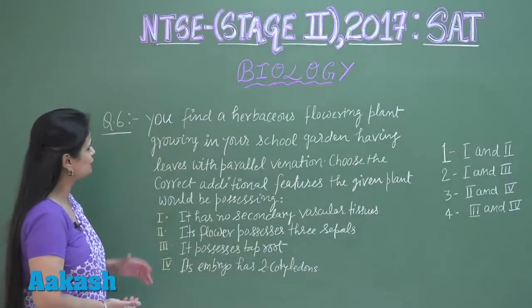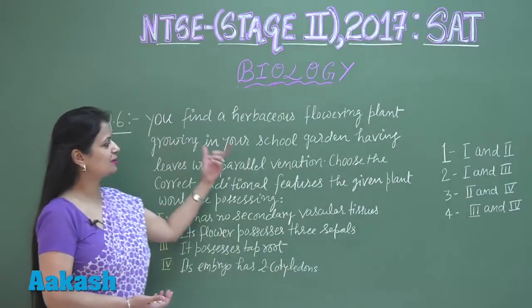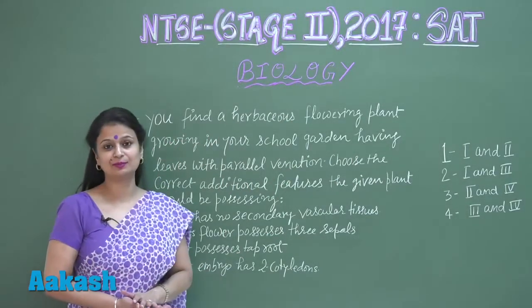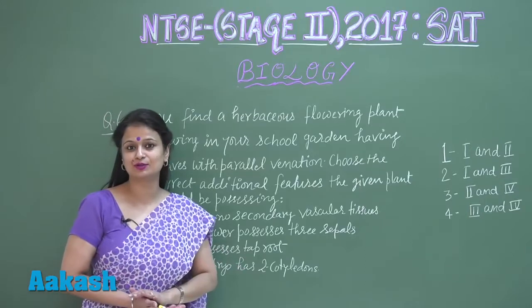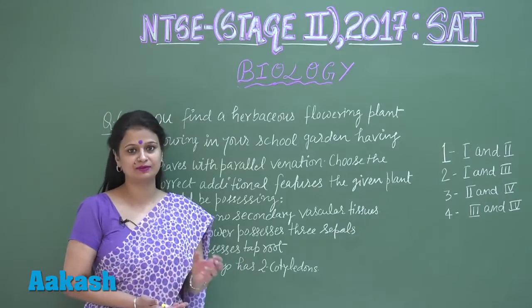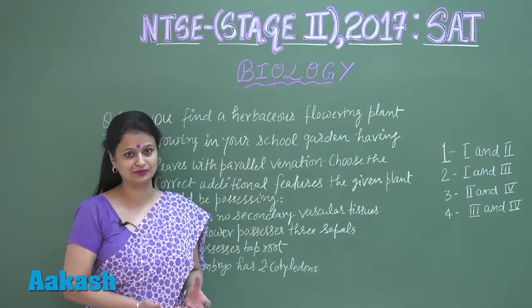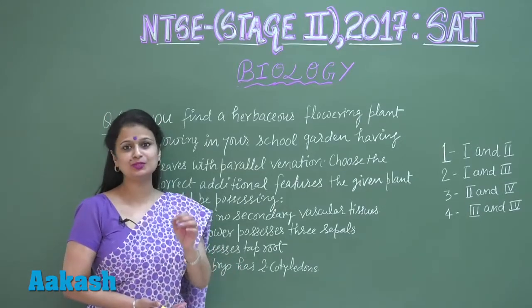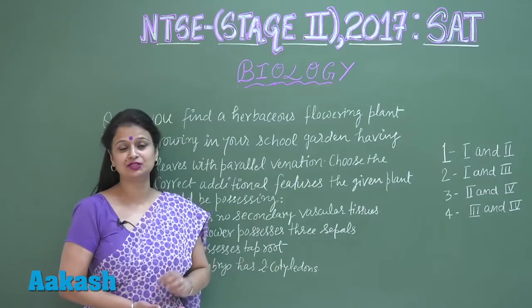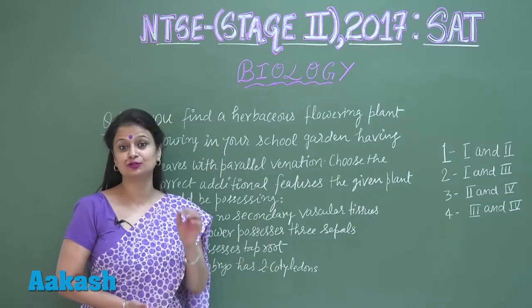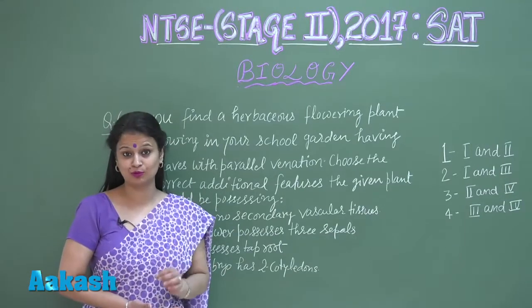In question number six, you have to find a herbaceous flowering plant in your school garden that has parallel venation in the leaves. You know very well that parallel venation is the feature of monocots.